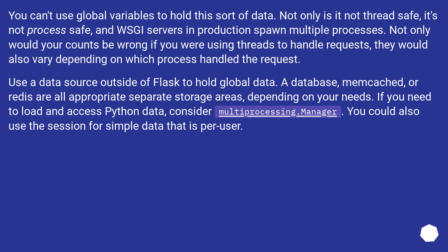Use a data source outside of Flask to hold global data. A database, memcached, or Redis are all appropriate separate storage areas, depending on your needs. If you need to load and access Python data, consider multiprocessing.manager. You could also use the session for simple data that is per user.